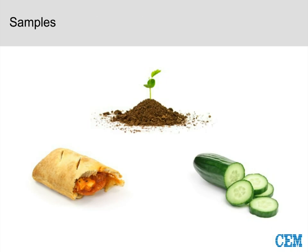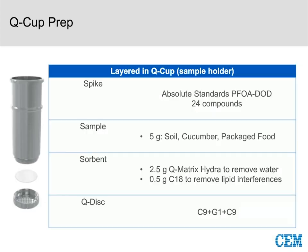Let's talk about the samples covered in this talk. We're starting with soil — that next wave of PFAS focus will be on environmental samples. Beyond soil, we'll also talk about a produce sample — specifically cucumber — and then a few packaged food samples as well. On the Edge, we're going to run the same method for all these samples, but we need to be aware of how we prepare them differently.